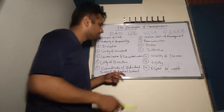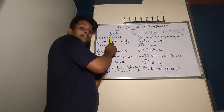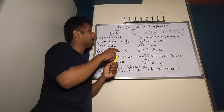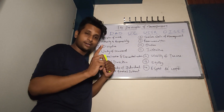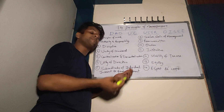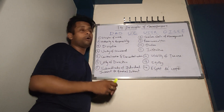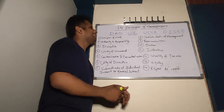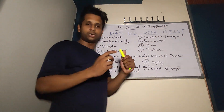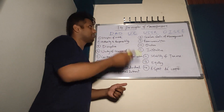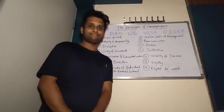So these are all 14 principles of management done by Henry Fayol. To remember them: a son asks his dad, 'Dad, you see USSR?' and the dad replies, 'Oh, I see!' — that's your mnemonic. Thank you so much.